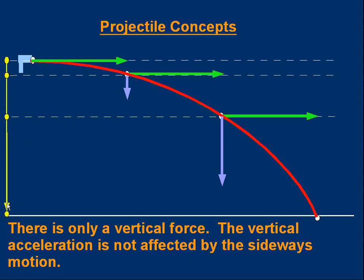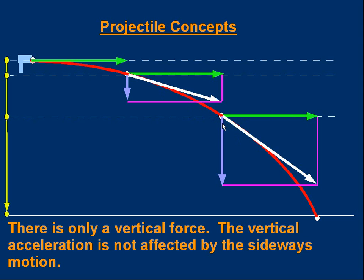What about the total velocity? The total velocity is the vector sum of the components, shown by the white arrow — its direction is a tangent to the trajectory. A bit later, the new velocity is the vector sum of the updated components, pointing in a different direction. The vertical component is growing while the horizontal component is fixed, so the resultant gets bigger and points downwards more steeply as time goes on. That's a very important diagram to understand — pause the video and make sure you are happy with it.